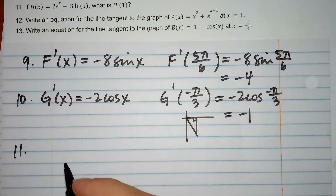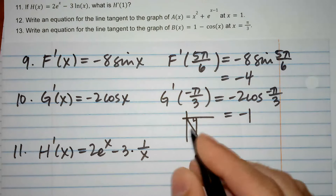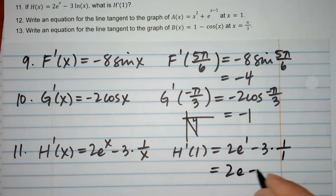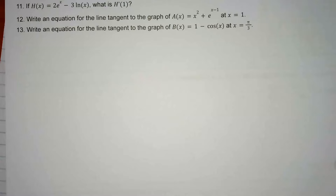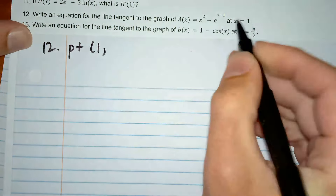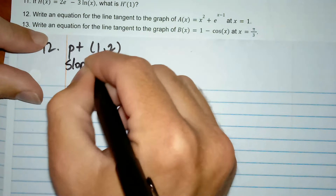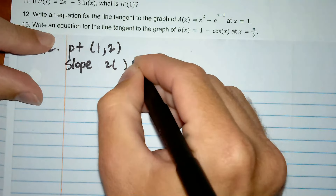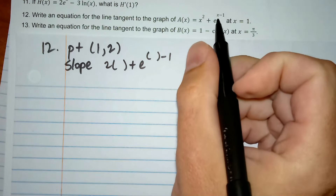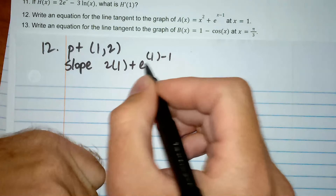Number 11: h(x) — we're asking for h'(1). h'(x) is going to be 2e to the x minus 3 times 1 over x. h'(1) is going to equal 2e to the 1 minus 3 times 1 over 1 — that's just 2 times e subtract 3.